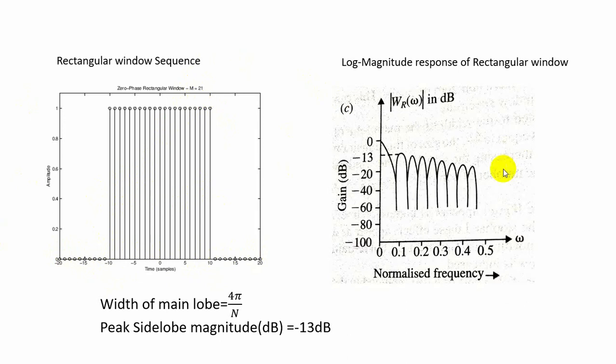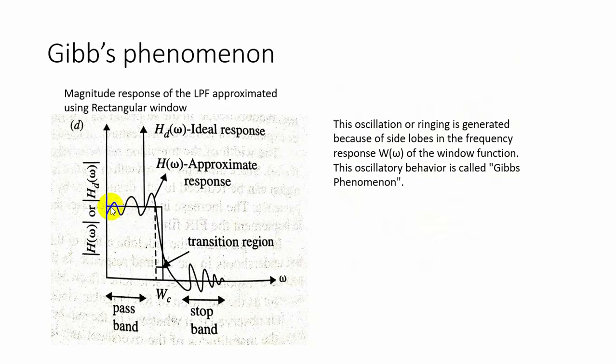When you are taking the log magnitude response of a rectangular window, here the width of the main lobe is equal to 4 pi by n and we are having more side lobes. The peak side lobe magnitude in terms of dB is equal to minus 13 dB.